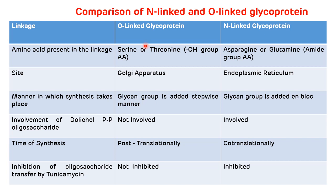The second difference is the site of synthesis: O-linked glycoproteins are synthesized in the Golgi apparatus, while N-linked glycoproteins are synthesized in the endoplasmic reticulum. Third difference: in O-linked glycoproteins, the glycan group is added in a stepwise manner, while in N-linked glycoproteins, the glycan group is added en bloc. Fourth, dolichol pyrophosphate is not involved in O-linked glycoproteins but is involved in N-linked. Additionally, oligosaccharide transfer in N-linked glycoproteins is inhibited by tunicamycin, while O-linked glycoproteins are not inhibited.